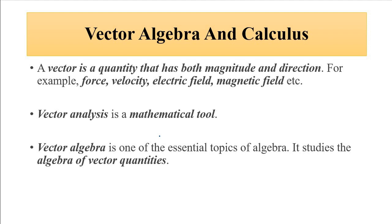As we know, vector algebra and calculus has been discussed in the basic physics playlist. A vector is a quantity that has both magnitude and direction — examples include force, velocity, and acceleration from mechanics, and electric field and magnetic field from electricity and magnetism. A vector is represented by an arrow, with the starting end called the tail and the ending end called the head.